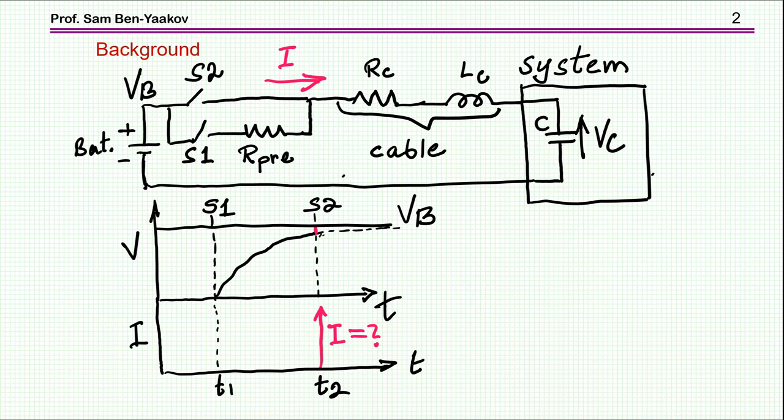I'm showing here a situation that we face many times in power electronics. We have a system here which is a bus capacitor, and then we have a voltage source—in this case I'm showing a battery—and you have to connect the battery to these capacitors, which of course at the beginning have no charge, no voltage on them.